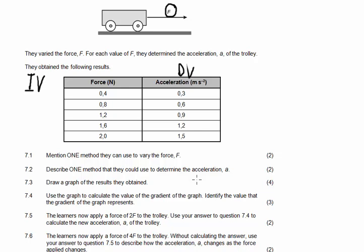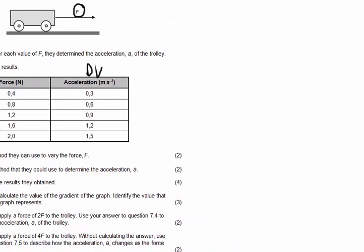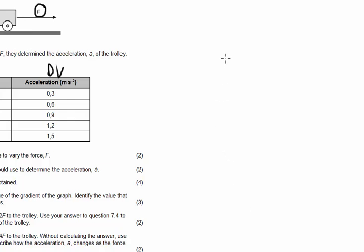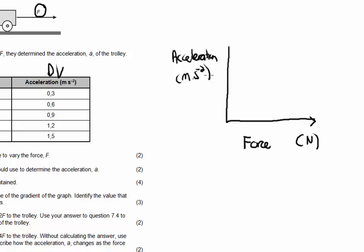Then draw a graph of the results they obtained. Now, when I draw this graph, I'm not going to use a ruler - you have to use a ruler, remember that. I'm going to place my independent variable on my x-axis. My independent variable here was force. And remember, we have to add a unit, it's measured in Newton. And acceleration is then going to be my dependent variable. This goes on my y-axis. Remember the unit meters per square second.